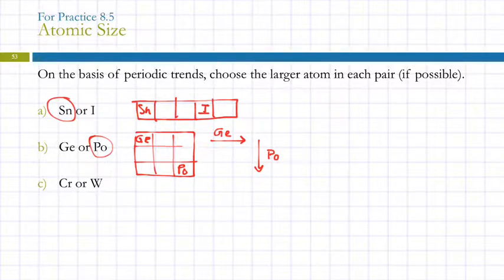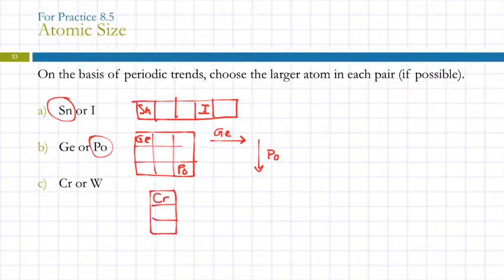For chromium and tungsten: tungsten is below chromium in the periodic table. The trend going down is that atoms get larger, so tungsten is the larger atom.